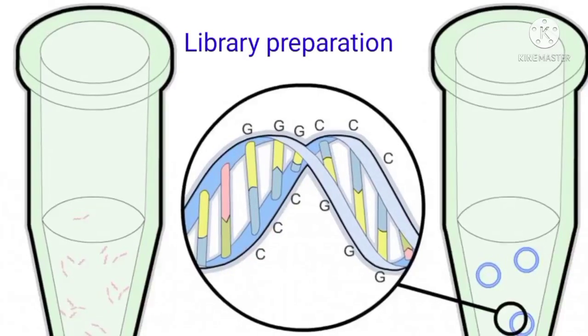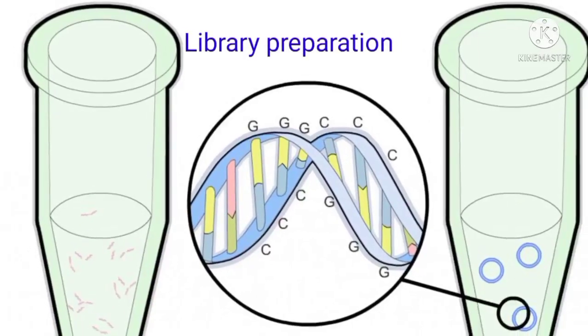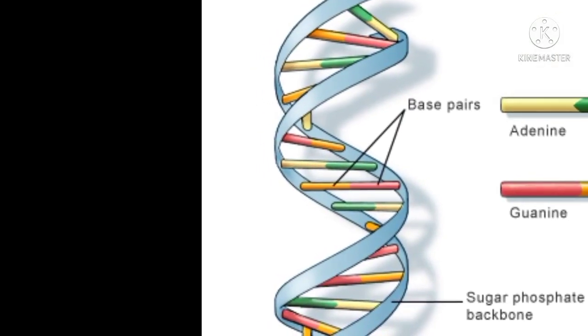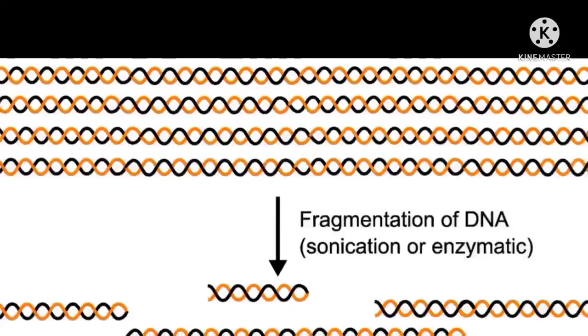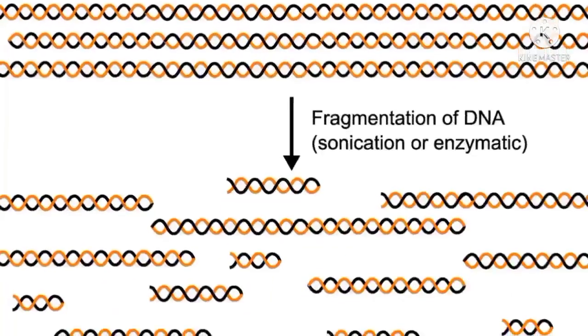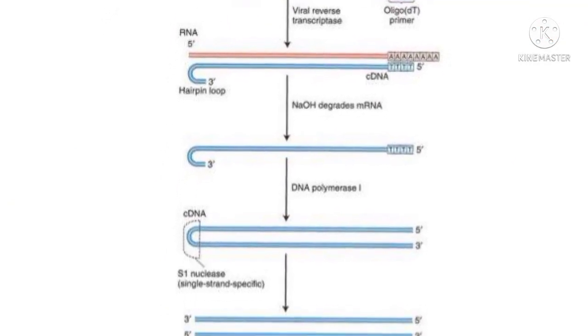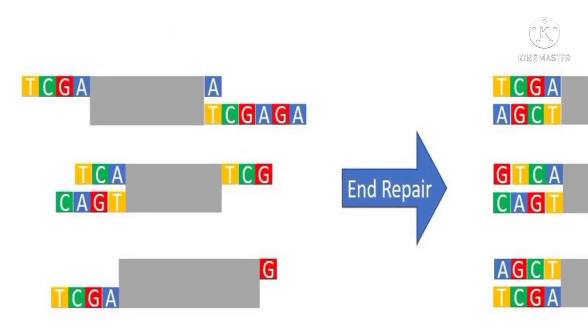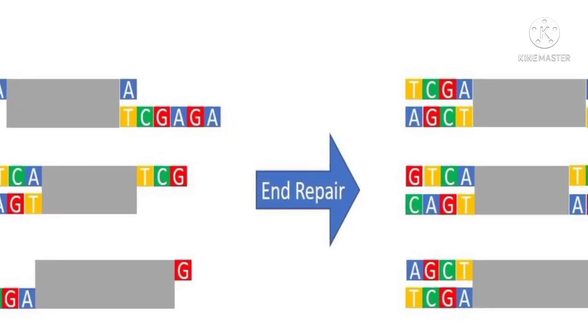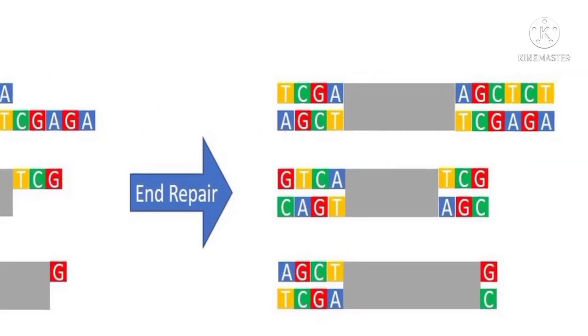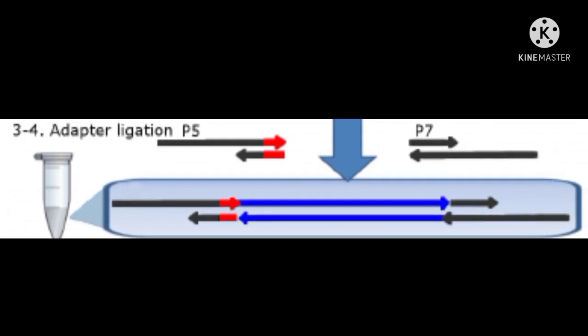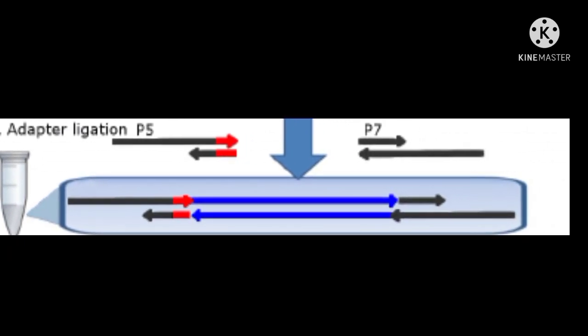Library preparation for Illumina sequencing platforms requires input of defined length therefore fragmentation of DNA or the use of cDNA prepared from RNA is the starting point. This is followed by end repair to generate blunt-ended phosphorylated molecules followed by the addition of non-templated dAMP tail before ligation to an adapter.